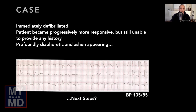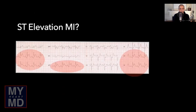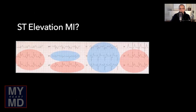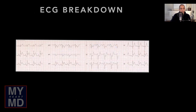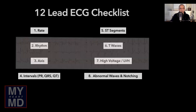Looking at the ECG, the first most glaring thing is there are ST elevations in both the inferior leads and the lateral precordial leads, with ST depressions in lead aVL and the anterior precordial leads V1, V2, and V3. The ST segments are horizontally depressed, so quite concerning. Before we get into what the ST segments mean, you ought to go through a quick checklist of the differential diagnosis for ST elevations and depressions.